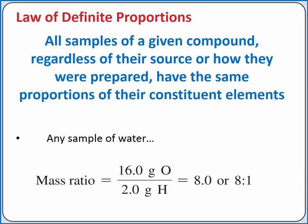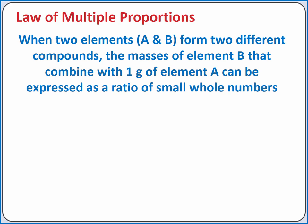no matter where we obtained the sample of water, and no matter how big the sample is, it could be 1 milliliter or 1,000 gallons, the sample will have an 8 to 1 ratio of oxygen to hydrogen by mass.